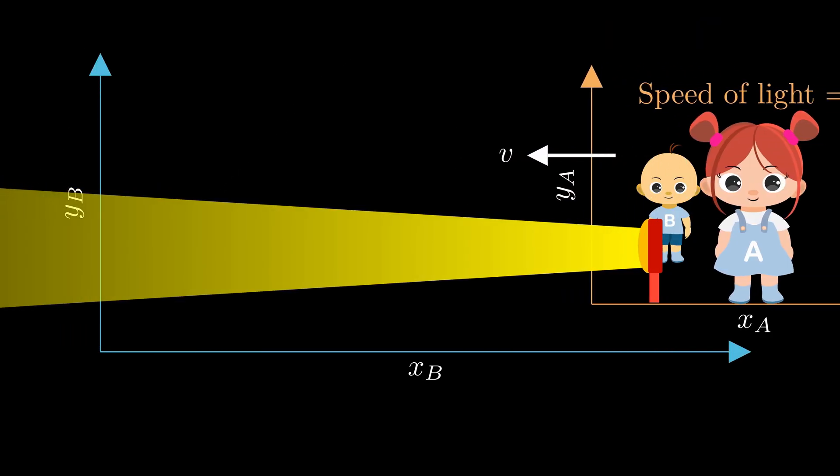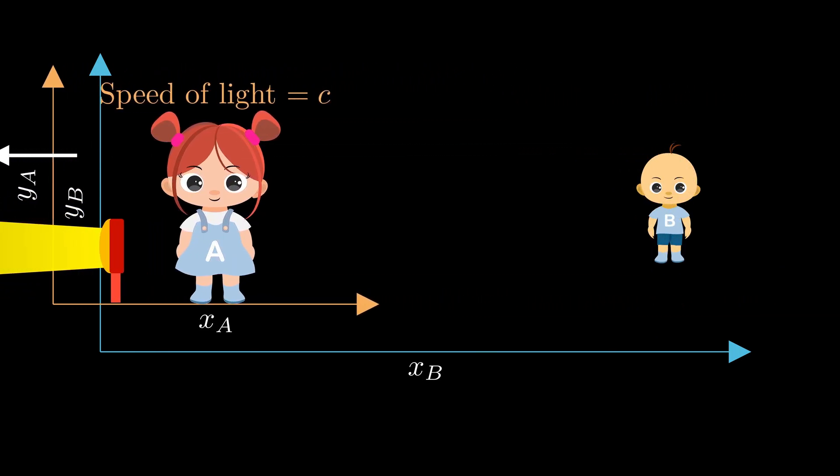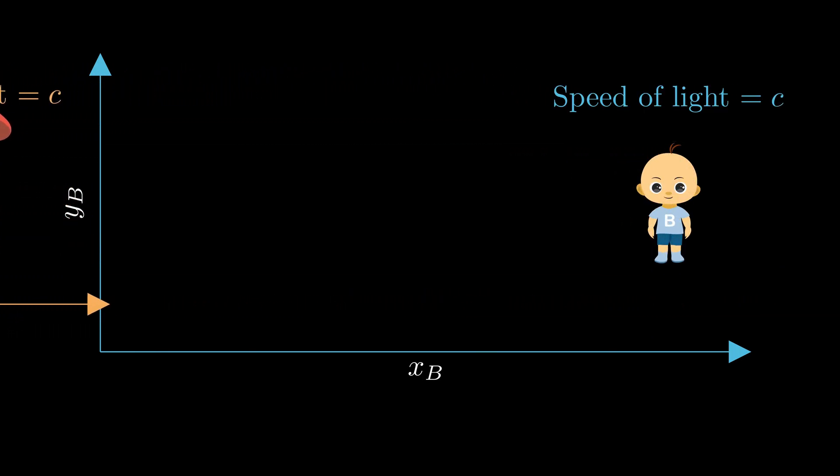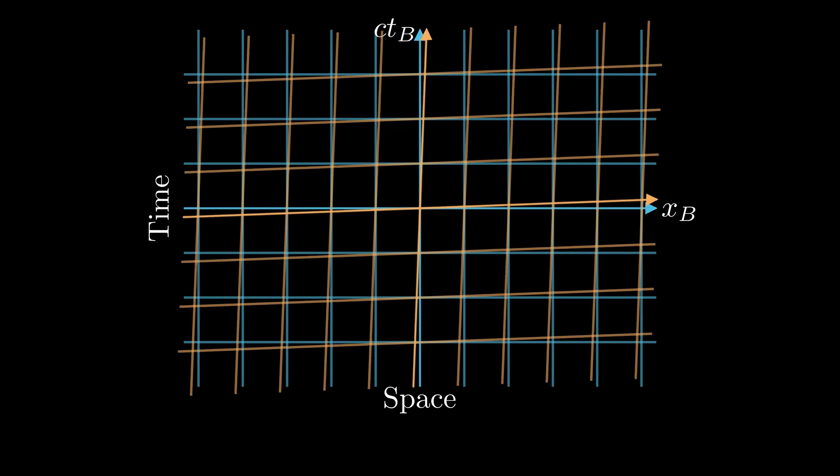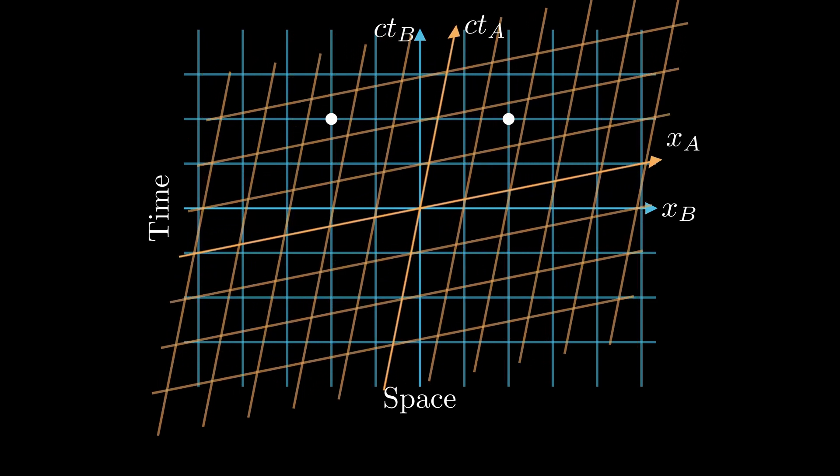For instance, both Alice and Bob would measure the speed of light from the train's headlight to be c. This defies Newtonian concept of relative velocity, fundamentally changing our understanding of space and time. And that is what sets the ultimate speed limit for all physical entities. Let's explore how.